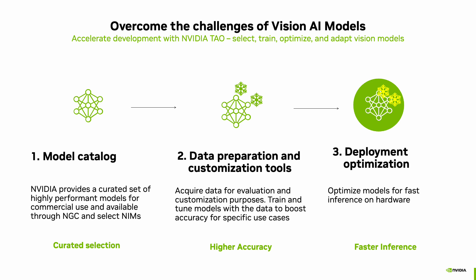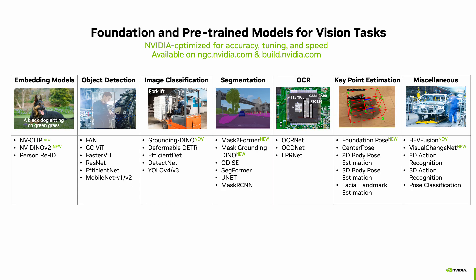The TAO Toolkit offers a curated set of commercially ready, pre-trained foundation models to help developers get their hands on leading model architectures in computer vision. These models are all trained on extensive commercially viable datasets — not data from the public internet. There are tools for customization so you can edit foundation models for specific needs, enhancing their accuracy, relevance, or reliability. Models can be downloaded from ngc.nvidia.com, and some are available as NIMs on build.nvidia.com.